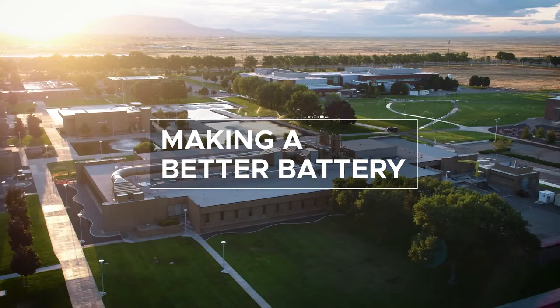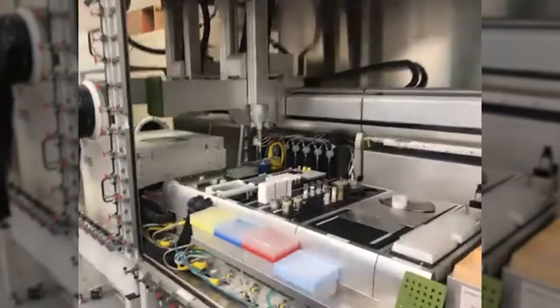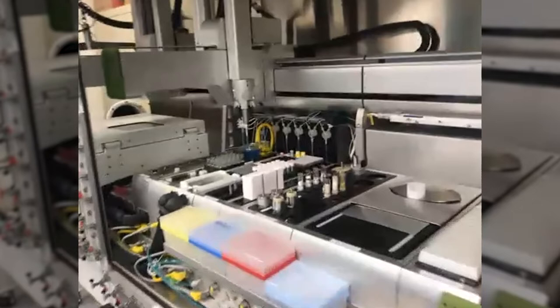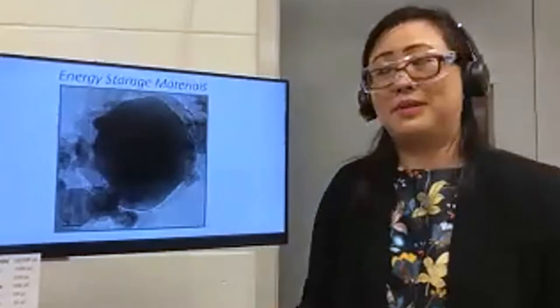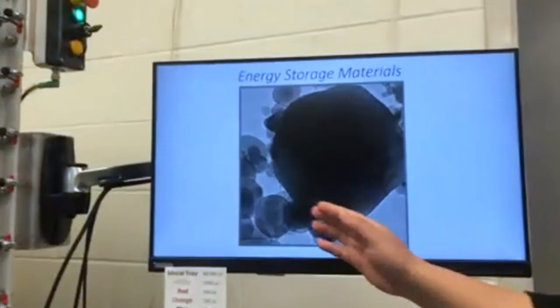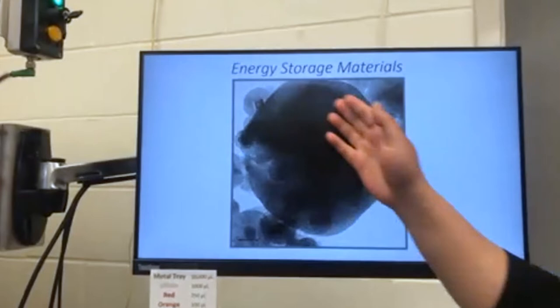We use the power of artificial intelligence and machine learning to sift through the literally millions of possible chemistries that do exist that could all become better batteries. Right now we can literally see what's going on in a working battery and modify materials to make a better battery.